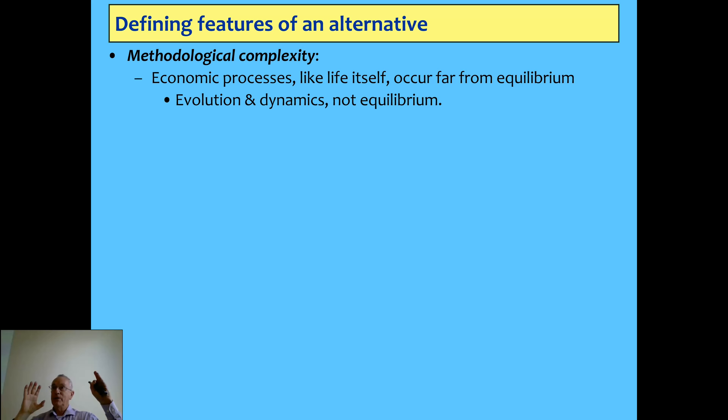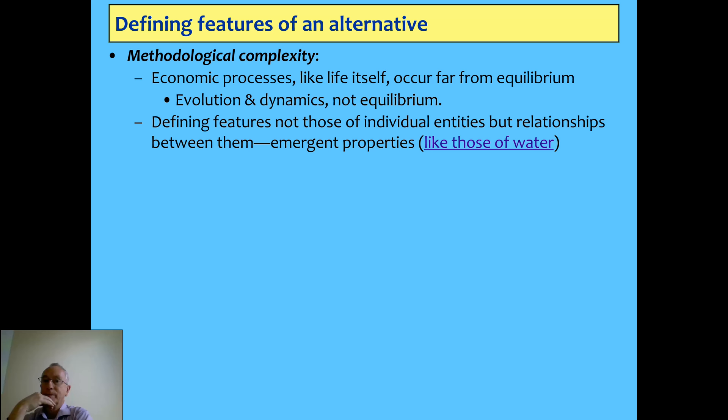First of all, equilibrium itself is not necessarily a desirable state. Secondly, it's extremely unlikely to be the state the economy is in. And thirdly, as Joan Robinson once said, if you were in equilibrium, how would you know? It's just an organizing concept which has infested how economists think about the economy. What is desirable is to avoid economic breakdown — and that was Minsky's point: stability doesn't mean equilibrium, it means avoiding breakdown of the economy.